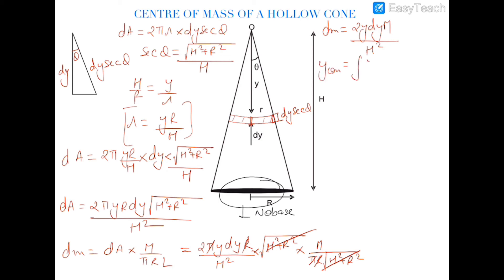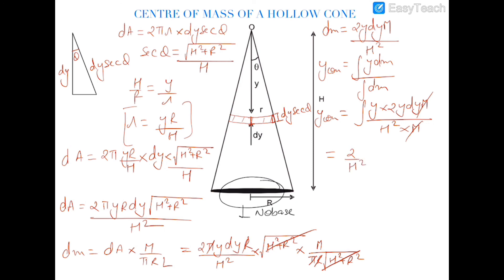The y_com equals ∫y dm / ∫dm. Substituting dm = 2yM dy / h² and cancelling M, we get y_com = (2/h²) · ∫₀ʰ y² dy = (2/h²) · [y³/3]₀ʰ = 2h/3. The height of the center of mass from the base is h − 2h/3 = h/3. So the center of mass of the hollow cone is at h/3 from the base.